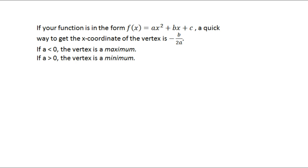A shortcut to get h is to use this little formula right there. h equals negative b over 2a, if your function is in this form.